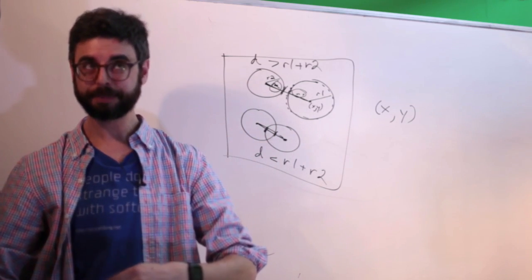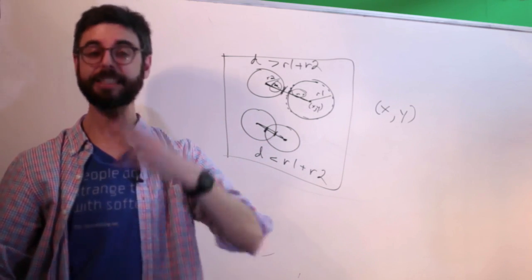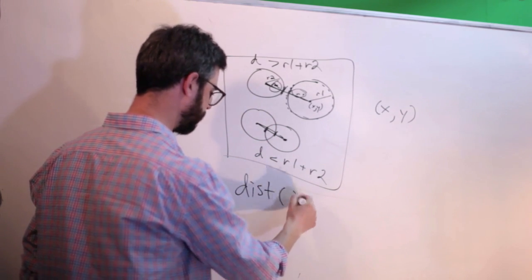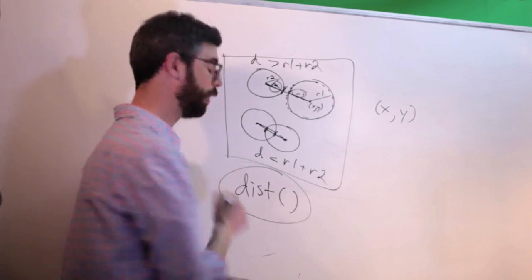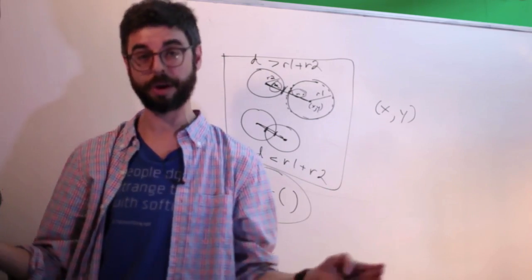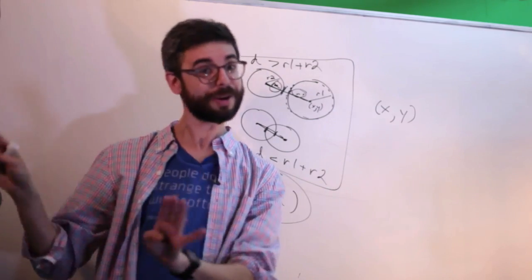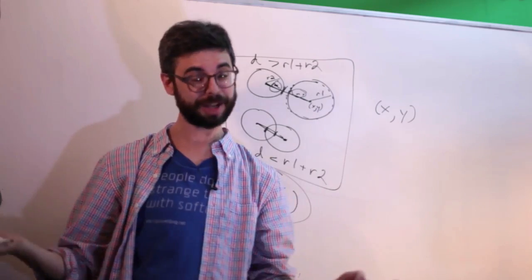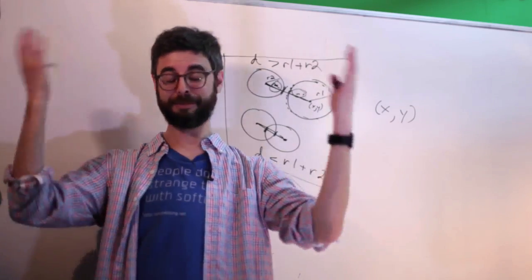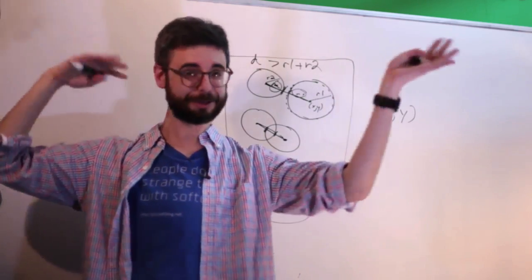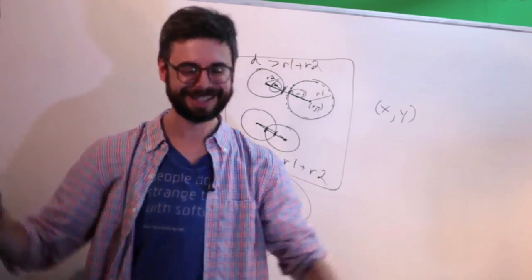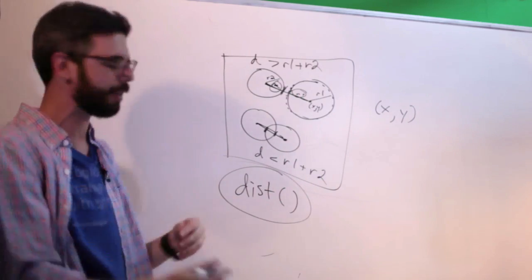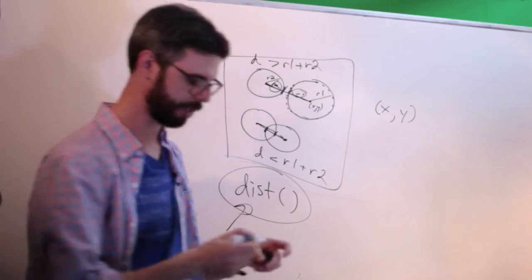p5.js has a distance function which calculates that distance for you. It's not too hard to calculate on your own — it just involves the Pythagorean theorem, and I'll link to somewhere that's described. But for this particular video, I'm just going to use the distance function.